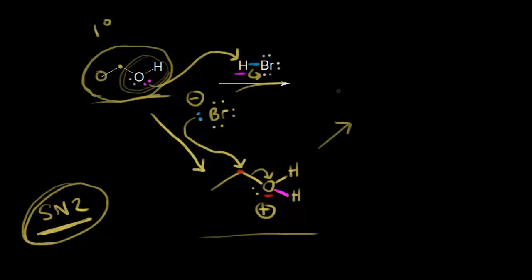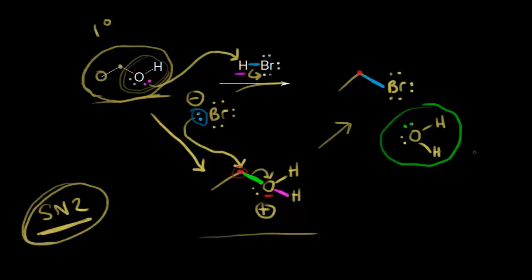The final product is ethyl bromide, or bromoethane. The electrons in blue formed the bond between carbon and bromine. We also form water as the leaving group, which is stable. For stereochemistry in this SN2 reaction: the carbon in red is not a chiral center because there are two hydrogens attached to it. So we don't need to worry about stereochemistry here — bromoethane is our only product.